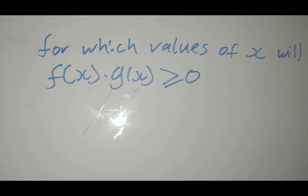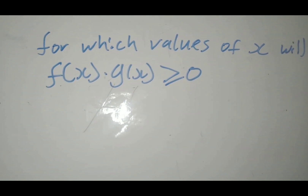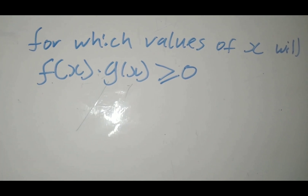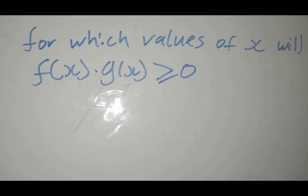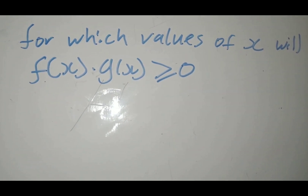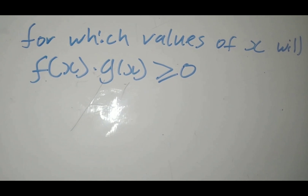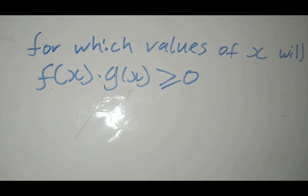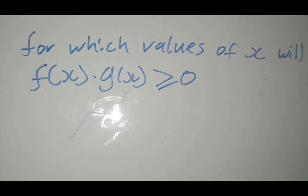Good day. Today I'm going to show you how to deal with questions where they say for which values of x will f(x) times g(x) be greater or equal to zero. This always comes out in the exam - if you don't find it in paper 1 you will definitely find it in paper 2. So just before we deal with this level, let's start from level 1.